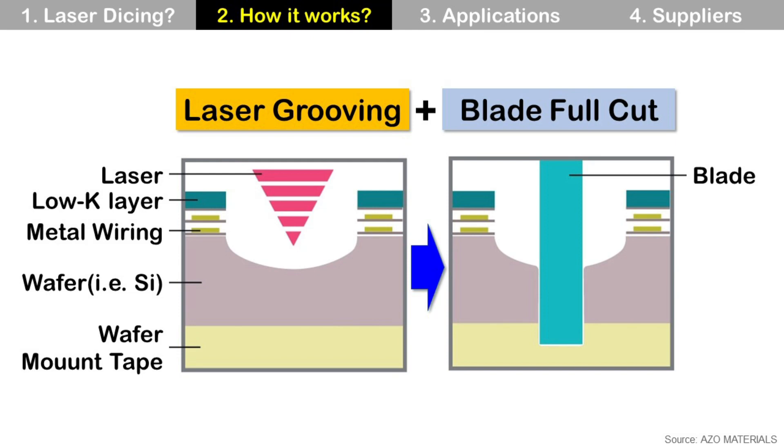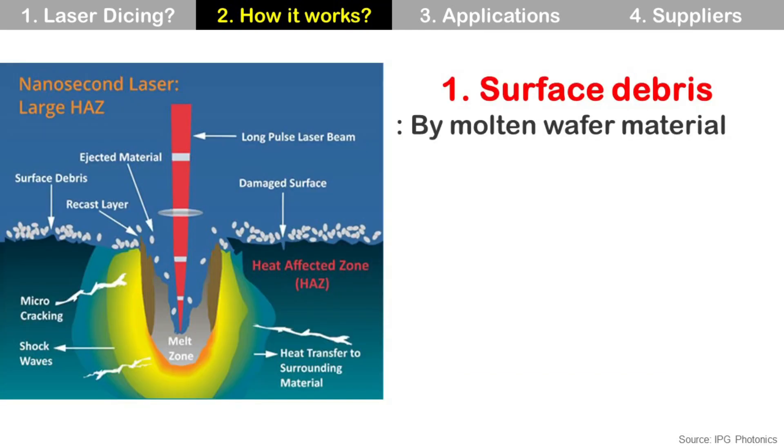Laser full cut is to dice wafer only by laser without following blade dicing. So wafer should be thin for high productivity. Even though laser dicing using ablation is better than blade dicing, it still has some problems.